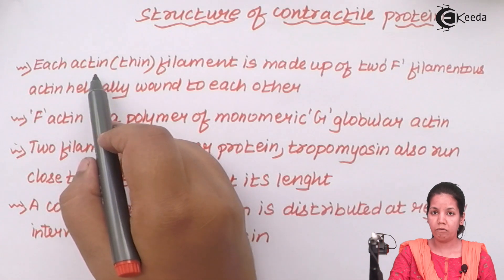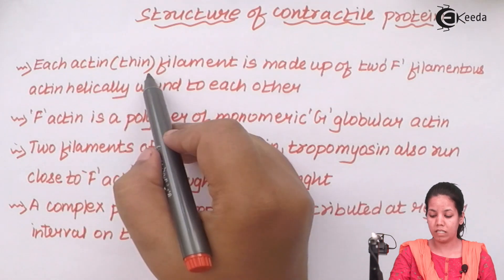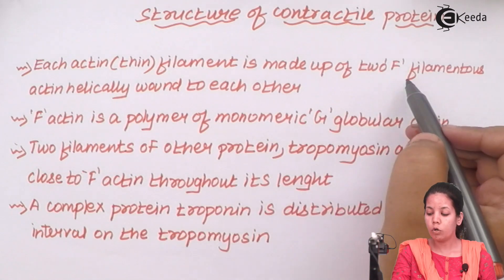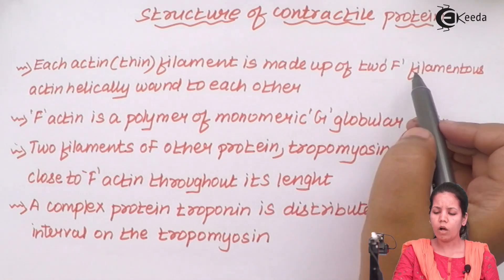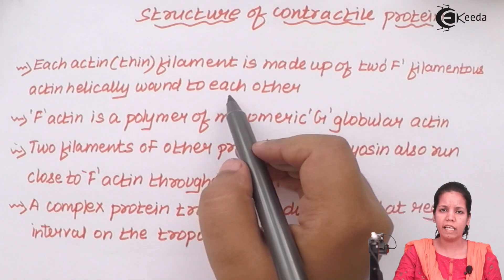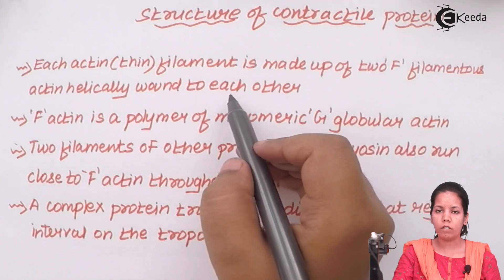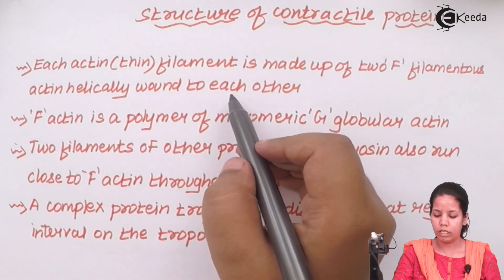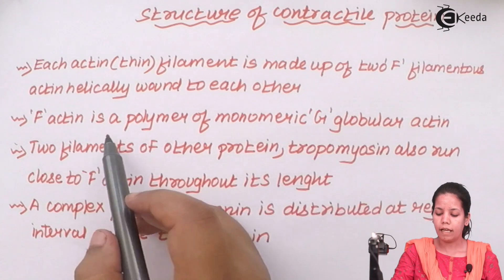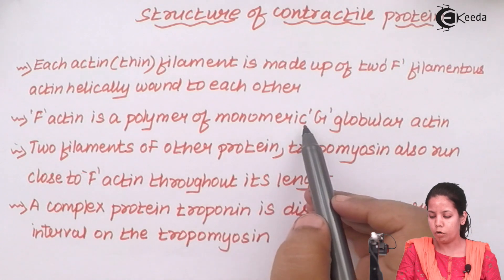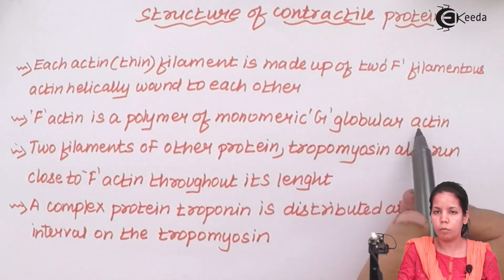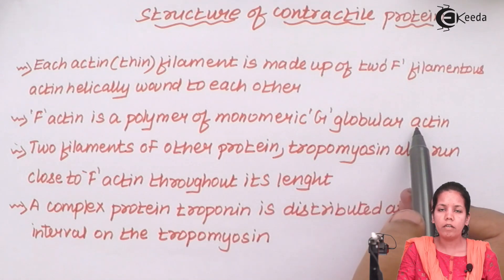Each actin filament, which is the thin filament, is made up of two F-filaments that are always helically coiled to each other. The F-actin is a polymer of monomeric G-globular actins, or a combination of G-globular actins.